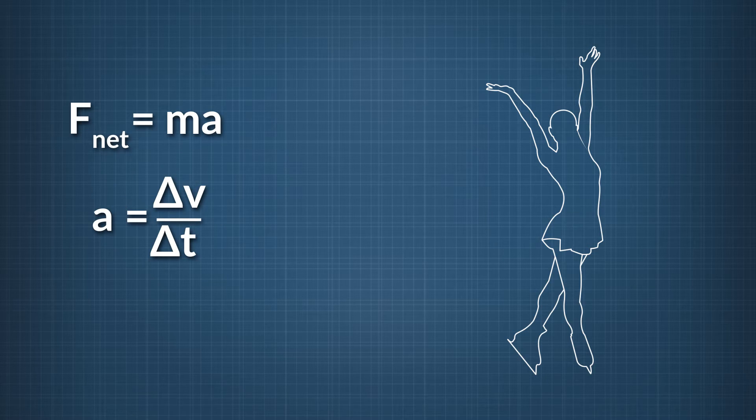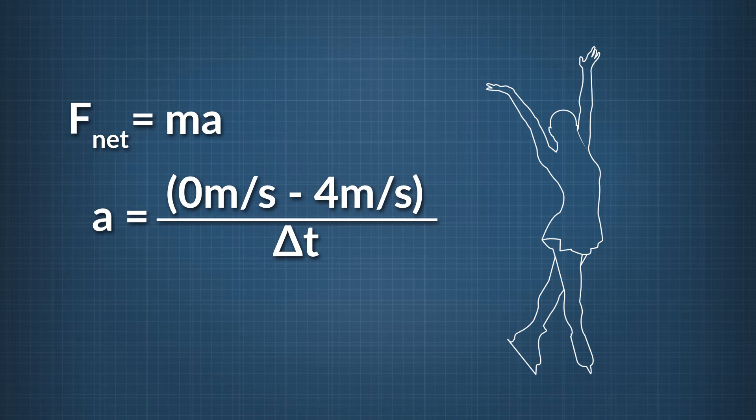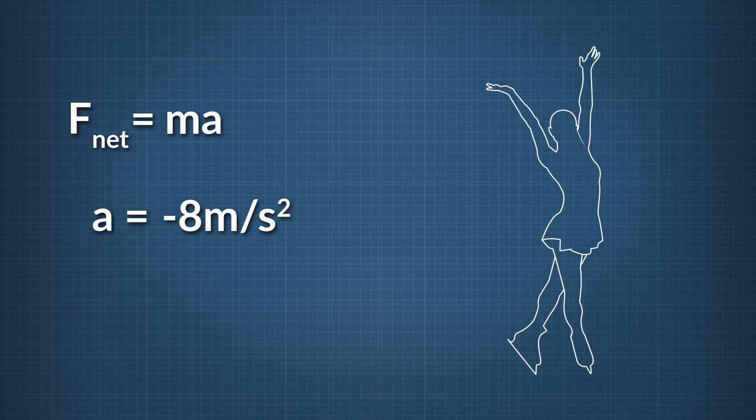Remember that acceleration is defined as the change in velocity divided by the change in time. The skater's final velocity, 0 meters per second, minus her initial velocity, 4 meters per second, divided by 0.5 seconds equals negative 8 meters per second squared.